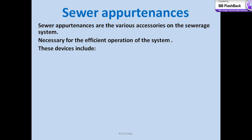Good morning friends. Today we shall be discussing about sewer appurtenances. So far we have learned about what are the systems of sanitation, what is sewer discharge and how to do the hydraulic designs of sewers. We have also discussed the network of sewer lines, that is sewerage system, and today we shall be discussing about sewer appurtenances. Sewer appurtenances are those structures which are constructed at a suitable interval along a sewerage system and help in its efficient operation and maintenance.